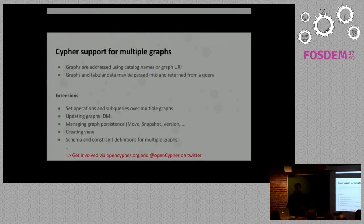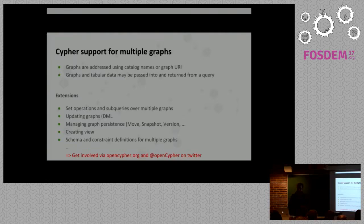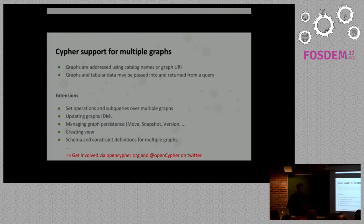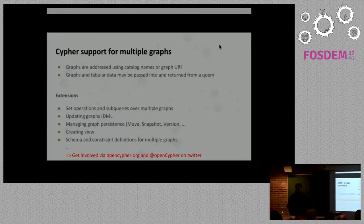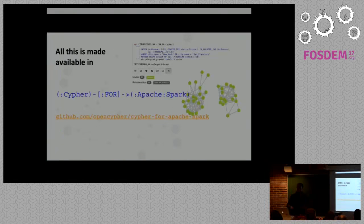There are still a lot of things up in the air that will become clearer in the first half of 2018. Graphs will likely be addressed using catalog names or some kind of graph URI. Extensions planned include set operations, subqueries over multiple graphs, managing graph persistence, and creating views. If you're interested in those topics there's a lot of material on opencypher.org, or you can get involved via Twitter. A first prototype of how this could come together will be shown by Martin and Max in the upcoming talk on Cypher for Apache Spark.